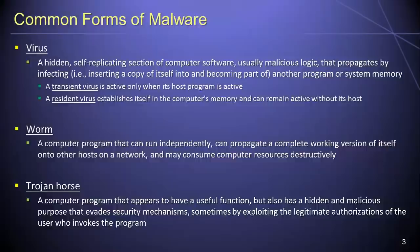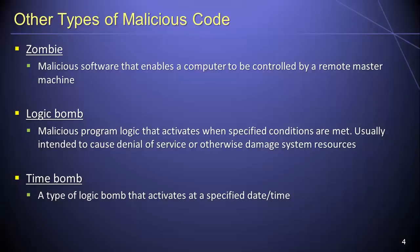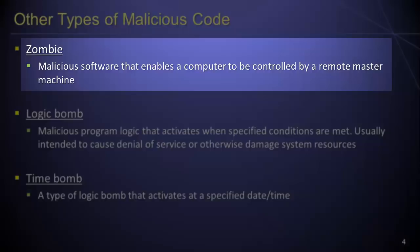Aside from viruses, worms, and Trojan horses, several other types of malicious code exist as well. A zombie, for example, is a malicious program that is designed to allow a computer to be controlled remotely by a master machine. Computers that have been turned into zombies are often used by malicious parties for purposes such as launching a distributed denial of service attack against a target organization or network.